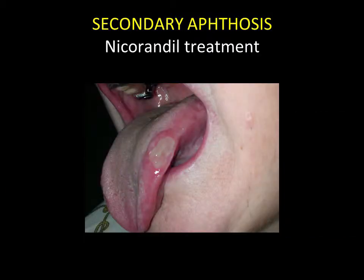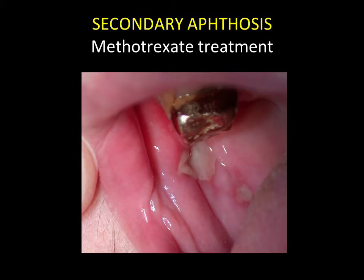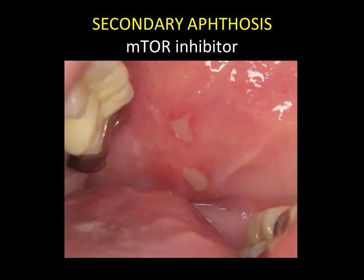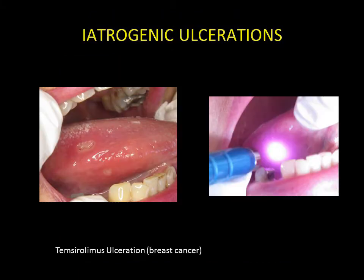Drug-induced ulcerations produce aphthosis ulcerations with little erythema, as seen here in the case of ulceration secondary to treatment with nicorandil. An overdose of methotrexate will often be accompanied by oral ulcerations. Aphthosis ulcerations are also very frequently observed where mTOR inhibitor-targeted therapies have been used. Treatment of these drug-induced iatrogenic ulcerations is based on local corticosteroid therapy, and in some cases on low-level laser therapy.